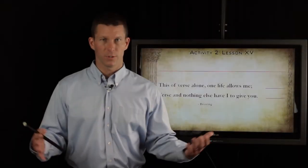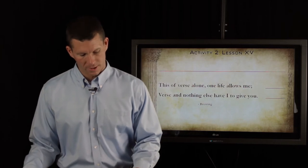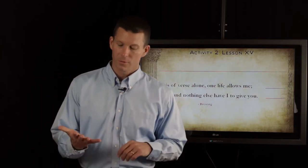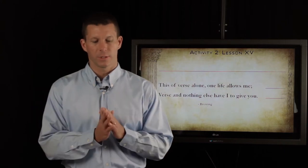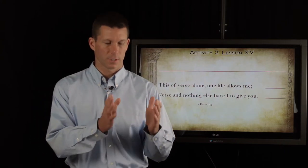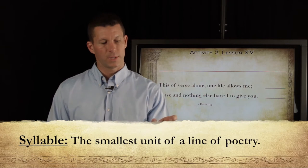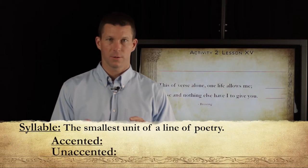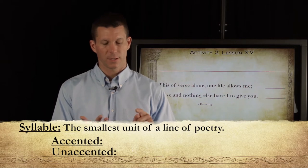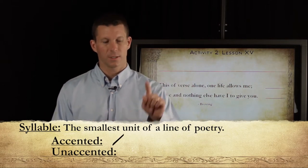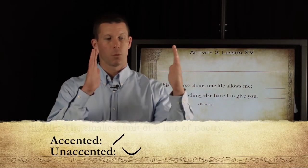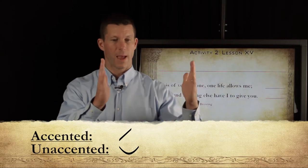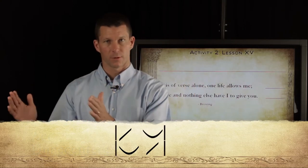We need to review what we've learned about scanning poetry, so let's take a moment and review those things right now. Remember that when you're scanning poetry, you're dealing with syllables. A syllable is the smallest piece of a line of poetry. Each syllable is either accented or unaccented. If it's accented, it receives a stress. If it's unaccented, it receives a breathe. Once you've put in your stresses and your breathes, you look for patterns, and you put foot boundaries around your patterns.